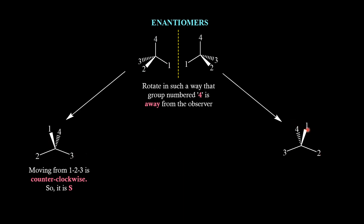With the mirror image molecule, moving from 1 to 2, then 2 to 3 gives a clockwise rotation, so this molecule has R configuration.